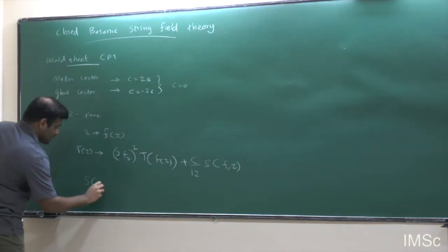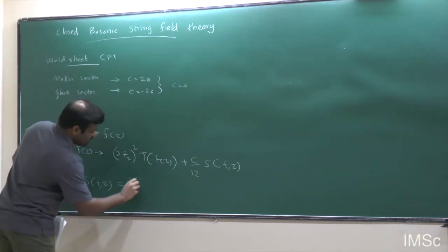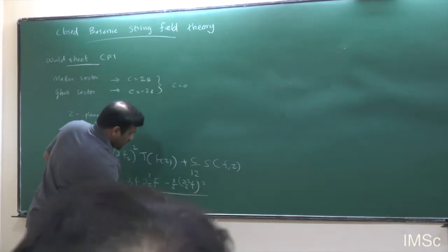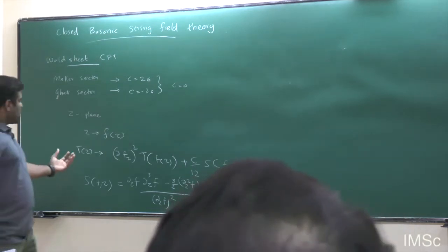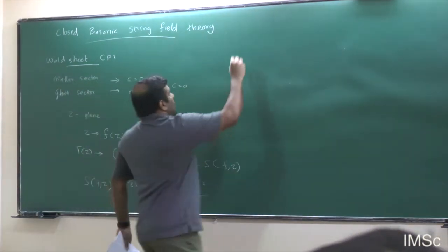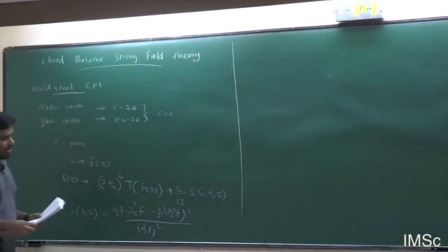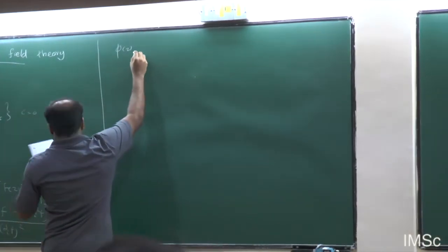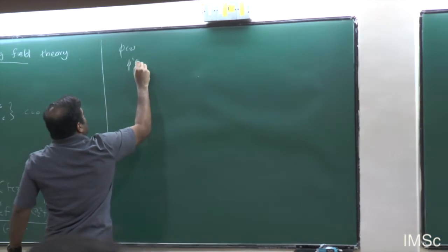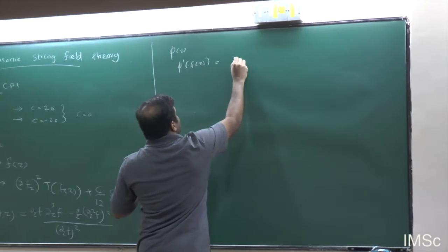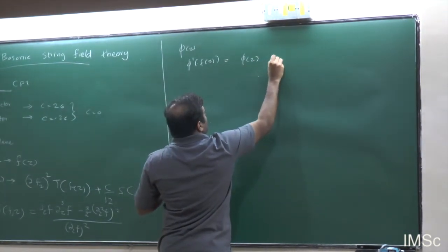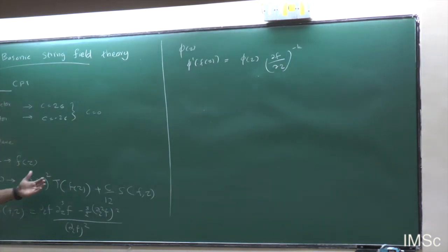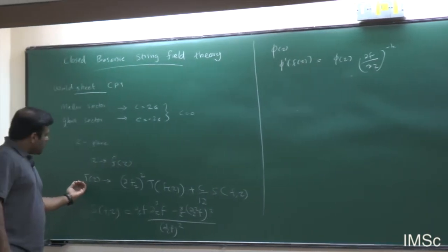The Schwarzian derivative is defined as F{C} = (∂_C³F)(∂_CF) − (3/2)(∂_C²F)² divided by (∂_CF)². This is the transformation property of the stress tensor. You also have a special class of operators called primary fields: if phi(C) is a primary field, it transforms as phi'(F(C)) = phi(C) · (∂F)^(−H). The central charge is the obstruction for the stress tensor being a primary field.